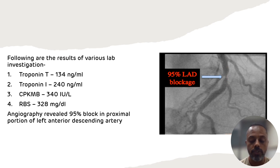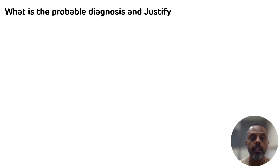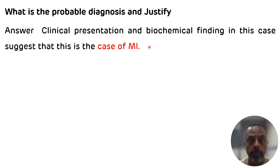Now let's see what are the questions. The first question is: what is the probable diagnosis and justify it? From the complaints of the patient — chest pain and heaviness — and from the biochemical investigations, we can say that the patient is suffering from myocardial infarction. There is elevation in troponin I, troponin T, and CPK-MB. The ECG showed ST segment elevation and angiography showed a block.